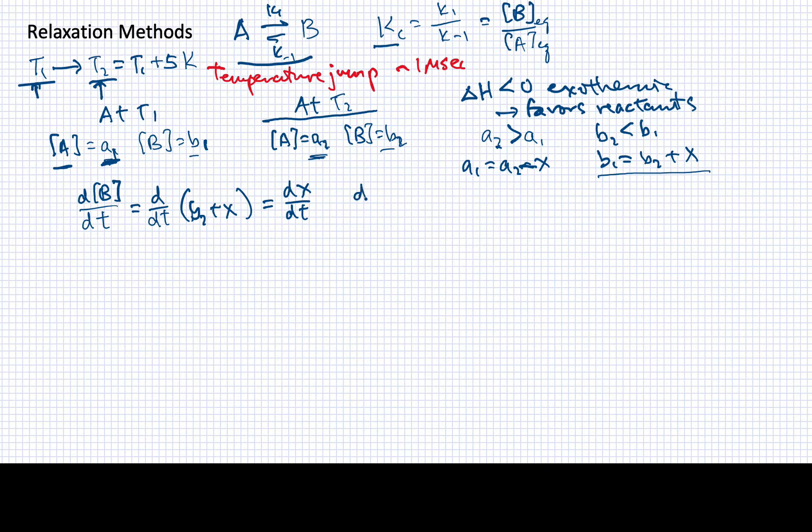I also know, just from looking at this reaction, the forward and reverse cases, that I can write down this differential derivative of B with respect to T is simply the rate at which B is produced, which is K1 times A, minus the rate at which it is used up, which is K minus 1 times B. But now I have expressions for A and for B, so I can just plug those in. A is going to be A1, which is A2 minus X, and B is going to be B1, which is B2 plus X.